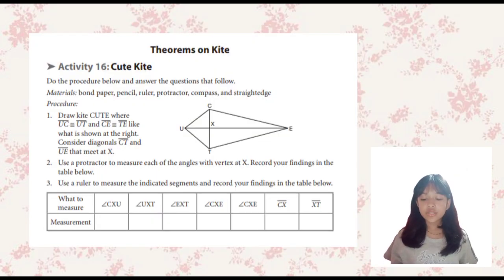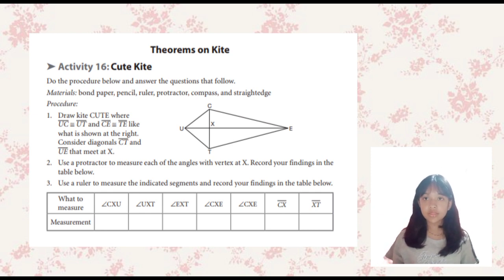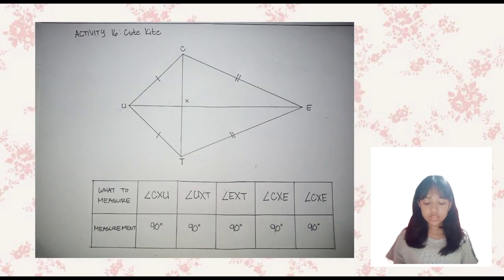There are two theorems under Theorems on Kite. Before we discuss the two theorems related to kites, we will first discuss Activity 16, Cute Kite. Here we have the kite CUTE, where segment UC is congruent to segment UT, and segment CE is congruent to segment DE. Consider diagonal segment CT and segment UE that meet at X. We are going to measure the indicated segments and record our findings in the table below.